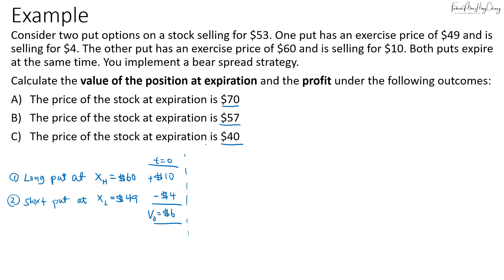Fast forward to when the option expires. Under scenario A, the spot price of the stock is $70. For both put options, they cannot be exercised because the spot price is higher than both strike prices, so the value of each is zero. The value of the bear spread strategy is zero. The profit is zero minus six, so it's a loss of $6.